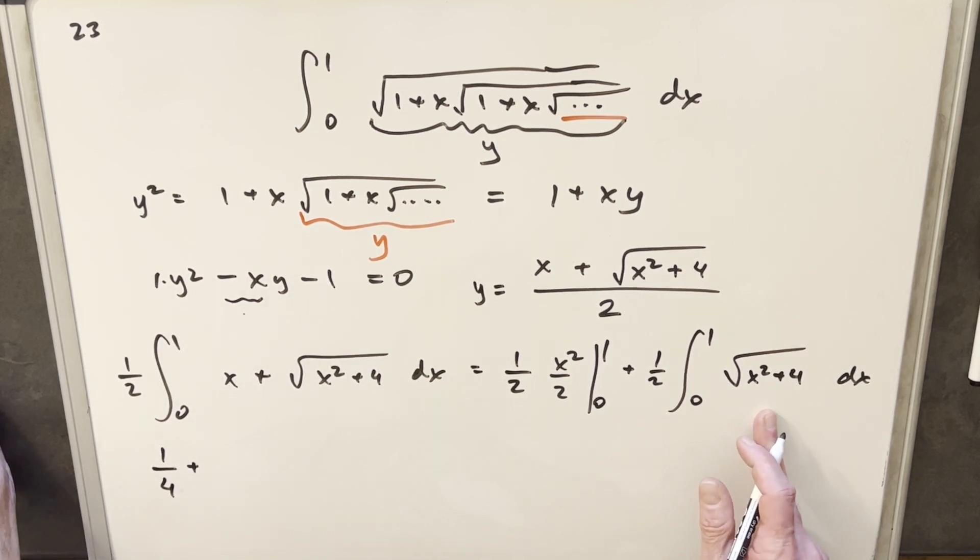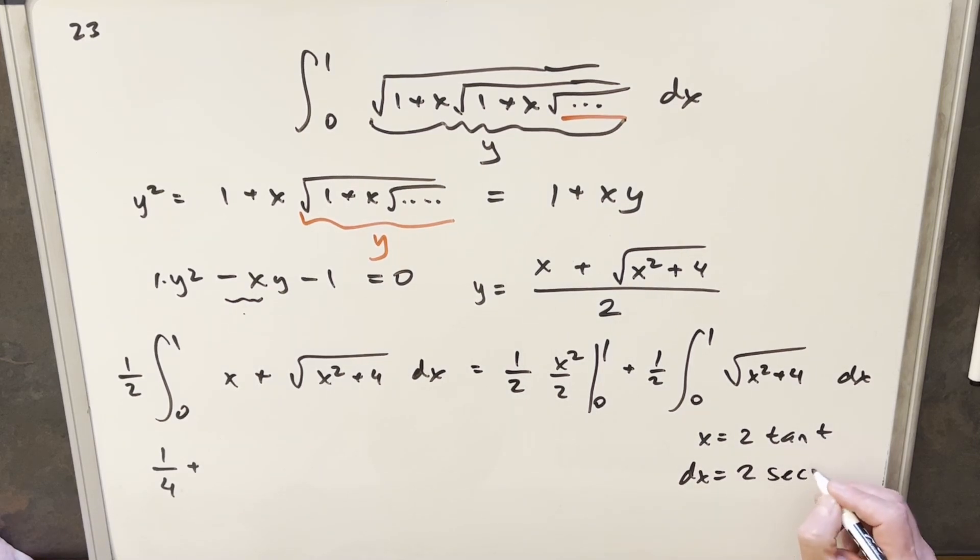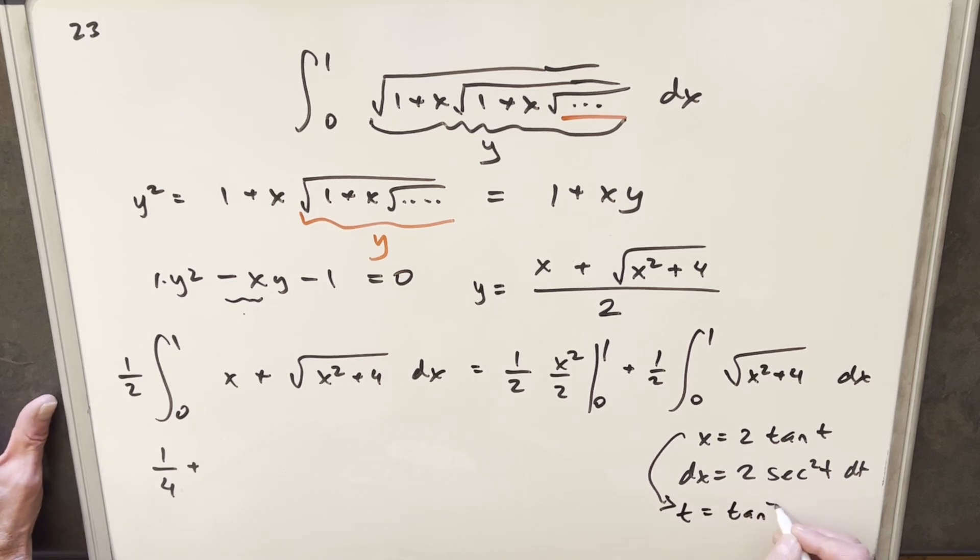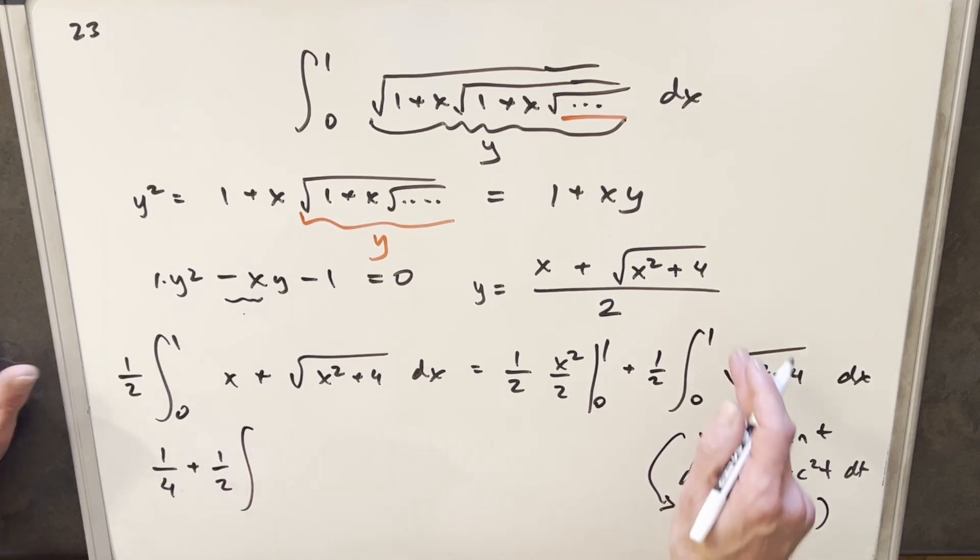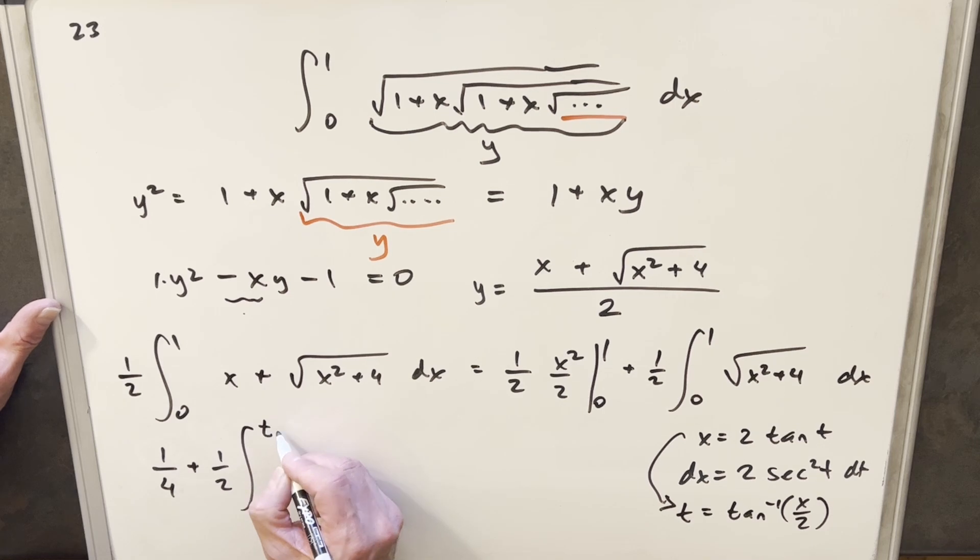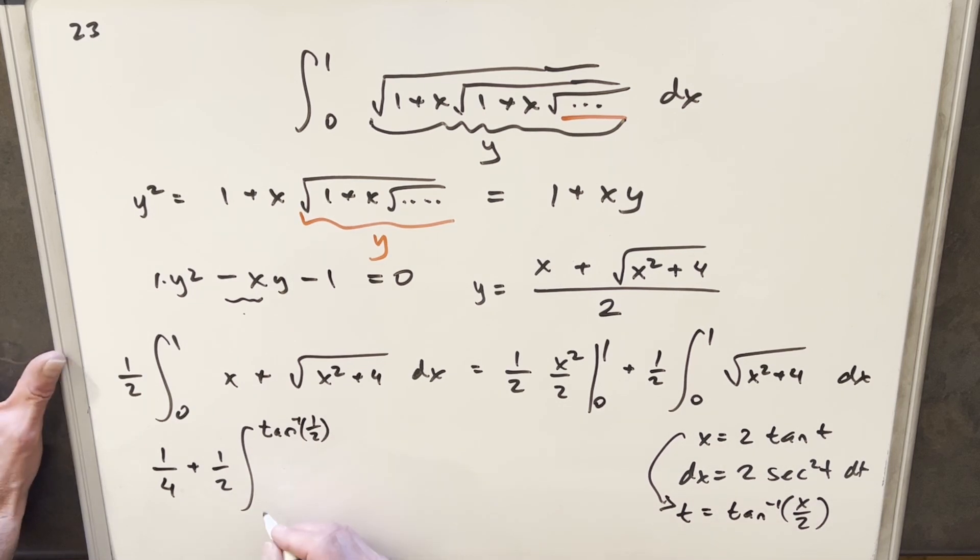Now for this, I want to do a trig substitution. For our trig substitution, I'm going to set my x equal to 2 tan t. That way when I square this, I'm going to get the 4 that I want there. For our derivative, dx is going to be 2 secant squared t dt. Before we substitute, let's get our value for t. We divide by 2, we have x over 2, so my t is going to be tan inverse x over 2. Let's make our substitution. First, we'll update our bounds. When I plug 1 in for x here, we have tan inverse of 1 half. That's not a really well-known value, so I'm just going to leave it that way. We'll plug 0 in here, tan inverse of 0 is just 0.